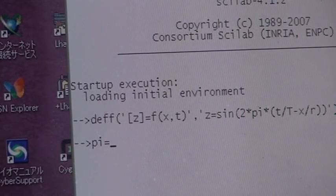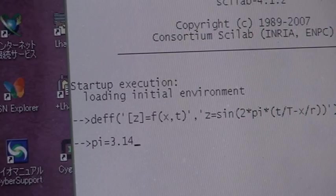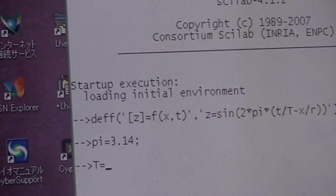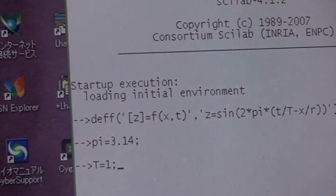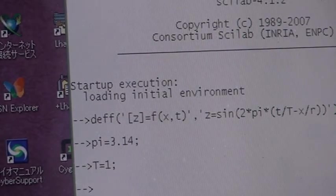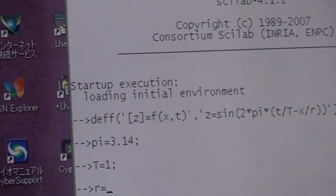π equal 3.14 and T equal the period one second. In the meantime, r equal one meter wavelength.